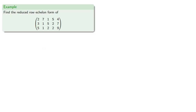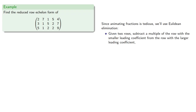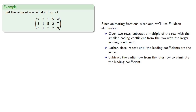For example, let's find the reduced row echelon form of this matrix. Since animating fractions is tedious, we'll use Euclidean elimination. Given two rows, subtract a multiple of the row with the smaller leading coefficient from the row with the larger leading coefficient, then repeat until the leading coefficients are the same, and then subtract the earlier row from the later row to eliminate the leading coefficient.